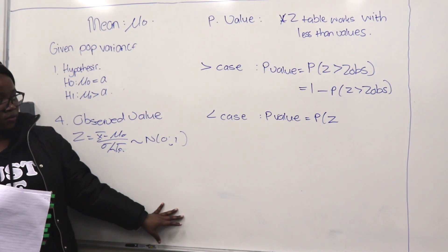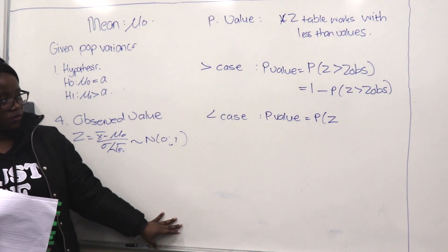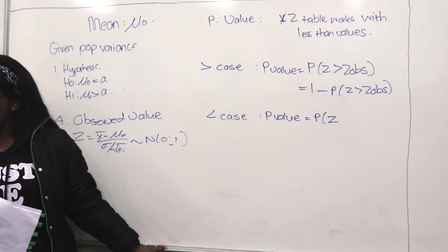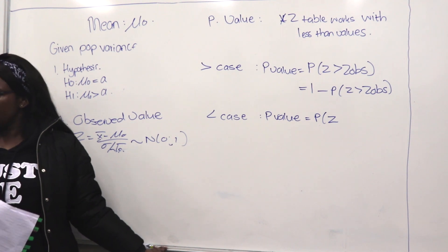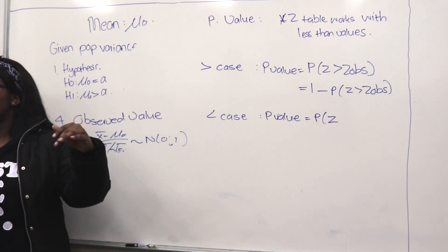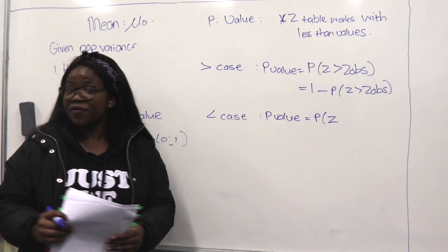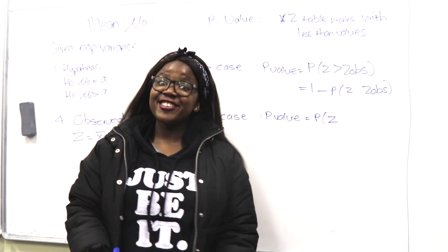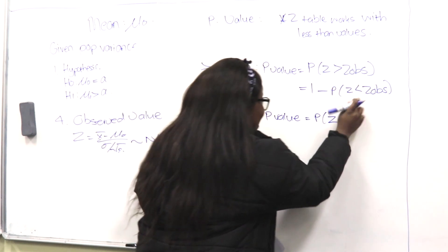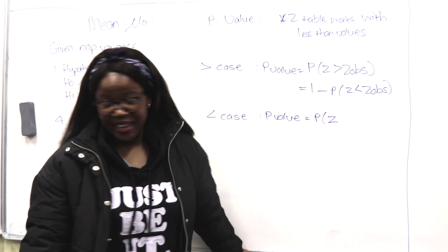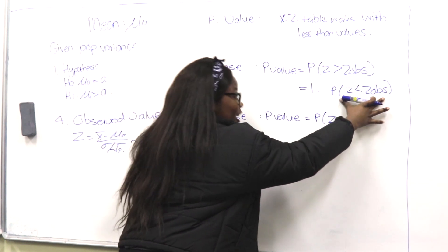Since you take 1 out of the probability of z greater than z observed, the inequality sign changes — the greater than becomes less than — so you can use the z-table. That's an important point: the sign changes, and then you can use the relevant table. Please don't make that mistake.